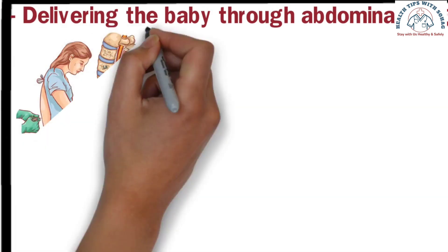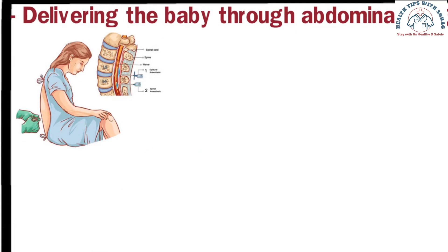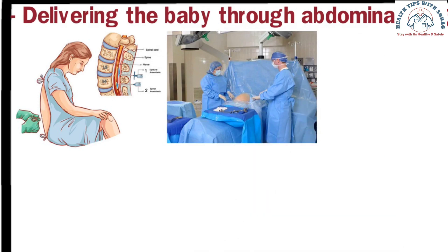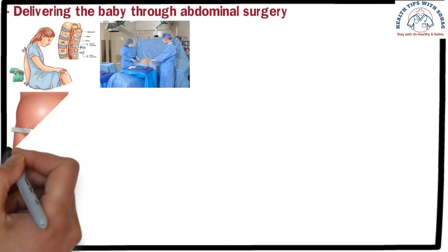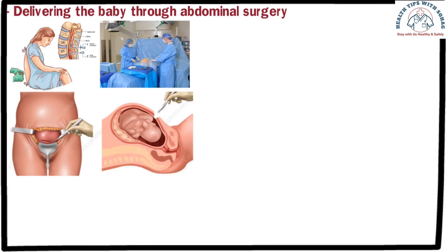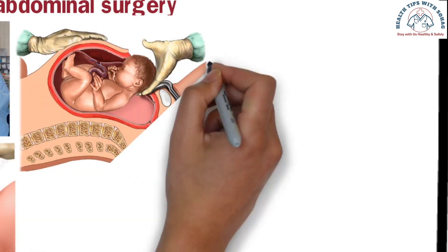For a caesarean delivery, a plan is made first and the operation is conducted in the operating theater. The first step is to administer anesthesia through an injection, which renders the lower body unconscious — the mother can still talk, see, and hear everything, but her lower abdomen and legs remain numb. Next, the mother's abdomen is sterilized and sterile drapes are used to cover the area. After confirming the anesthesia is working, the surgeon begins making the incision, cutting through the upper layer of the abdomen, then subcutaneous tissue, then muscle tissue, then peritoneum, and finally the uterus.